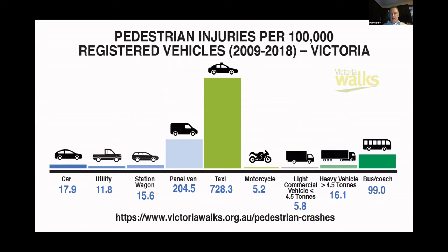Going back to the police reported stats, that does have a better breakdown of vehicle type. To get a sense of exposure, MUARC looked at pedestrian injuries per 100,000 registered vehicles. The standout here is taxis, and to a lesser extent panel vans and buses — these are overrepresented vehicles in pedestrian crashes.